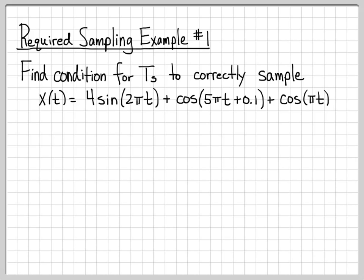This is the continuous time signal that we want to sample according to the sampling theorem to avoid aliasing. We're actually asked to find a condition on the sampling period, T sub s. The key thing with any problem like this is identifying the largest frequency. Because to apply the sampling theorem, we need to know the maximum frequency, and then we multiply that by 2, and that is the slowest rate at which we should ever sample.